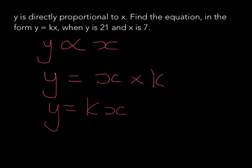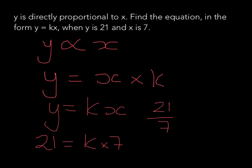The next part of the question is quite straightforward. We just substitute in the values for y and x. So y is 21, and we've got k times x, which is 7. So we get 21 = k × 7. We then do 21 divided by 7 to find k, so k equals 3.